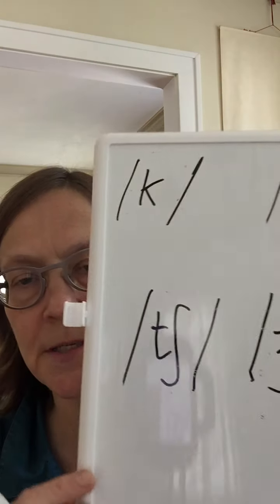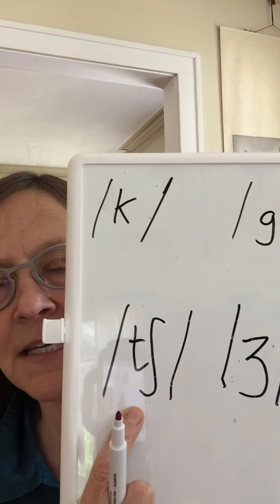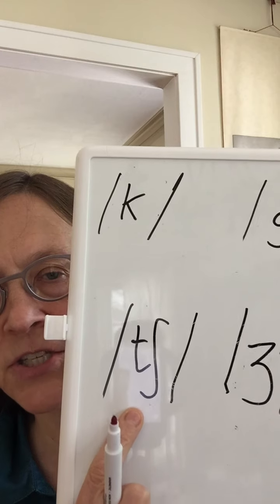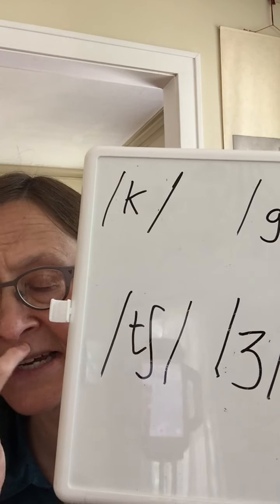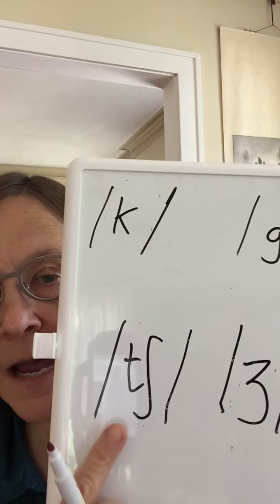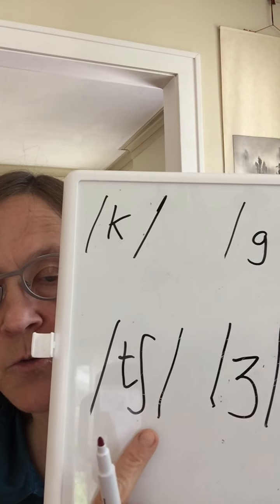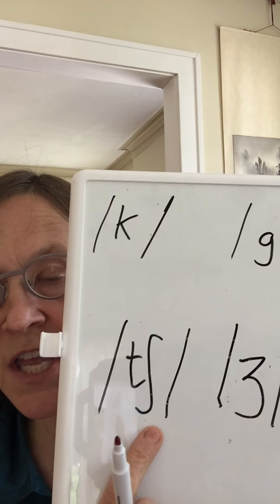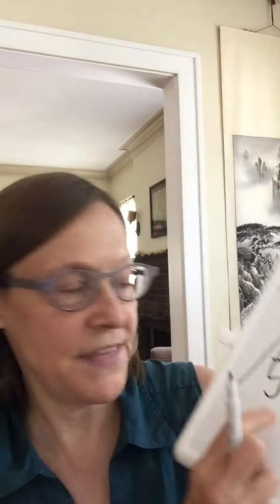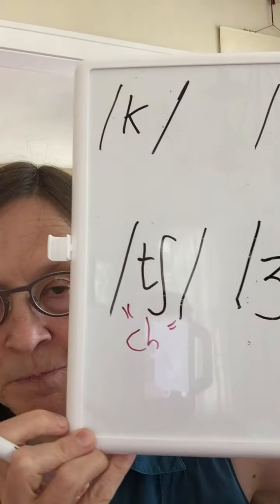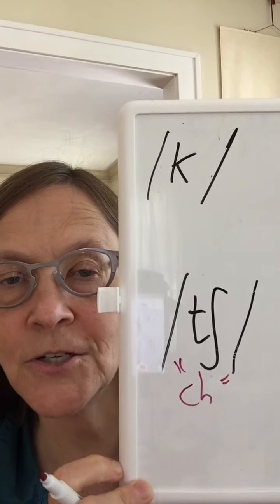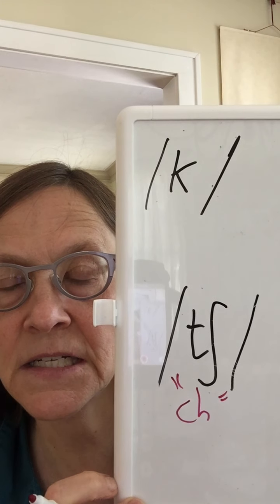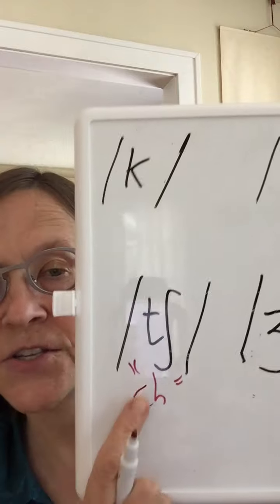When you're transcribing, you'll only use the NG in the middle or at the end of words. This next sound is not going to be on the phonetic chart — it's called an affricate. It's actually a stop, the stop sound T, put together with SH, and it is what we think of as the CH sound.